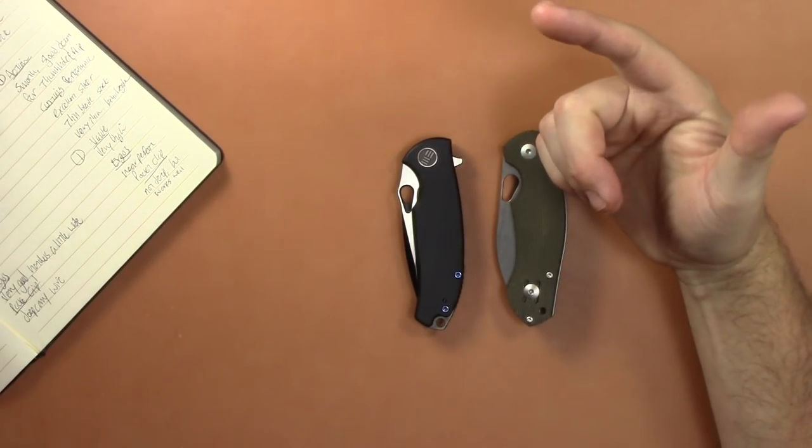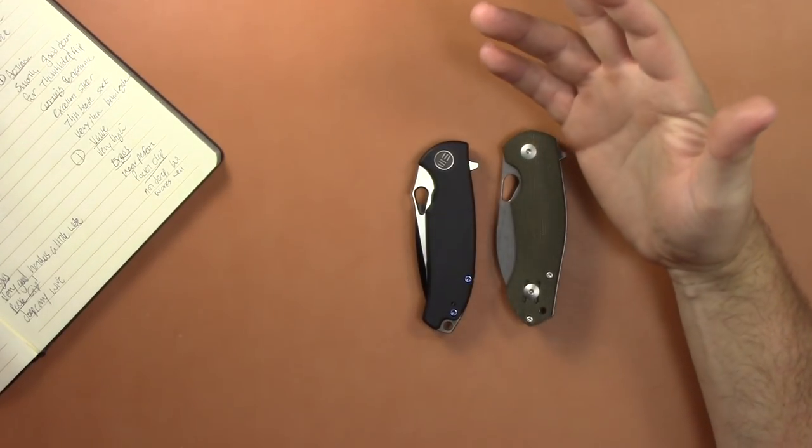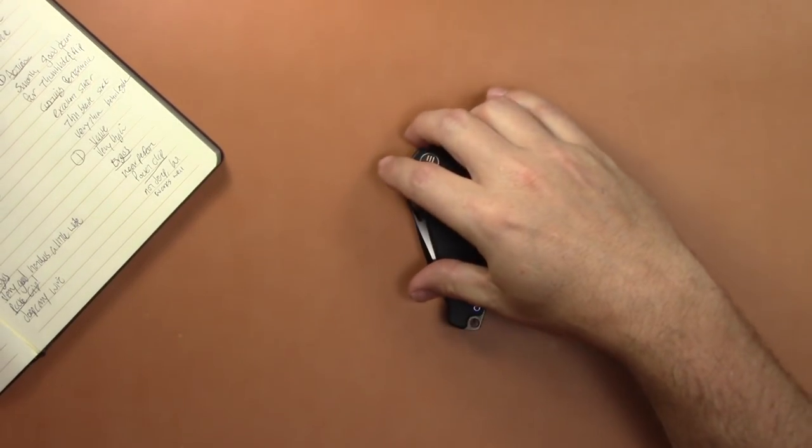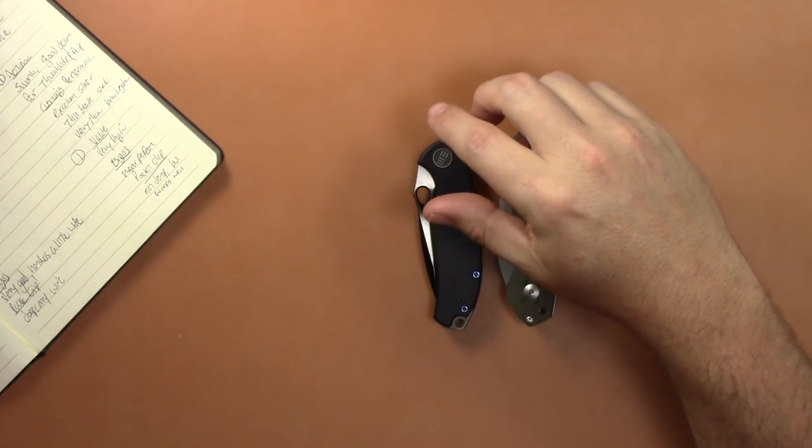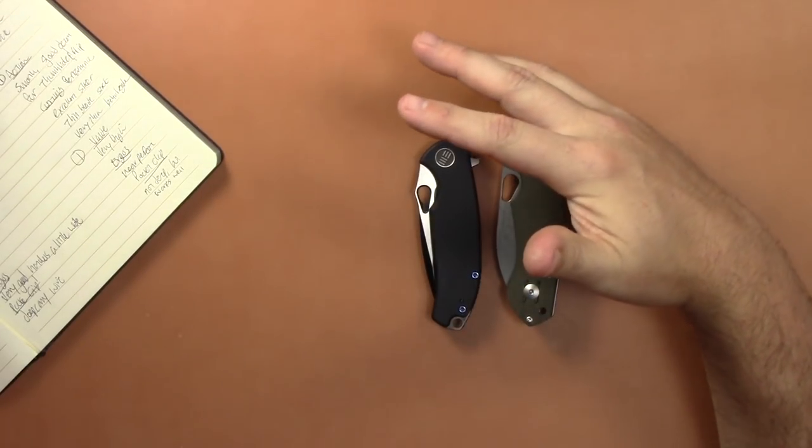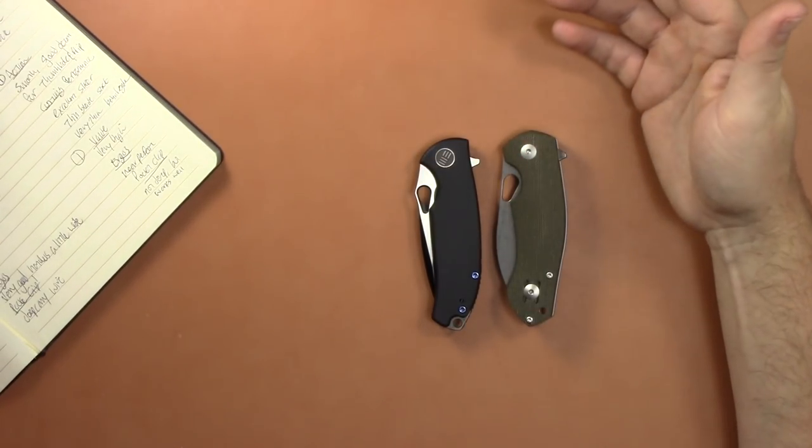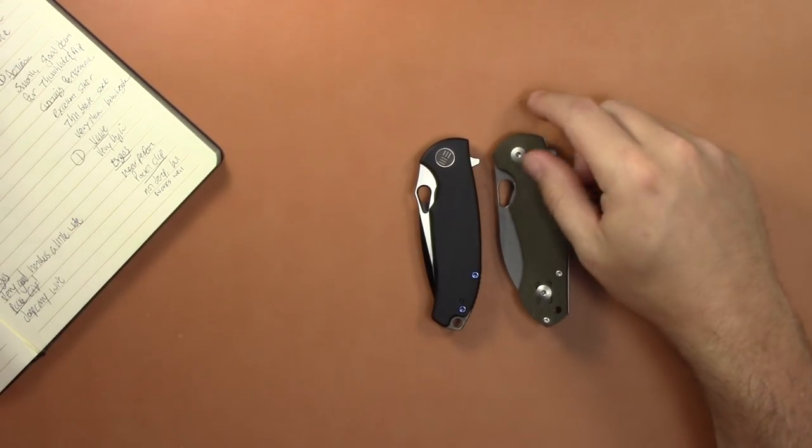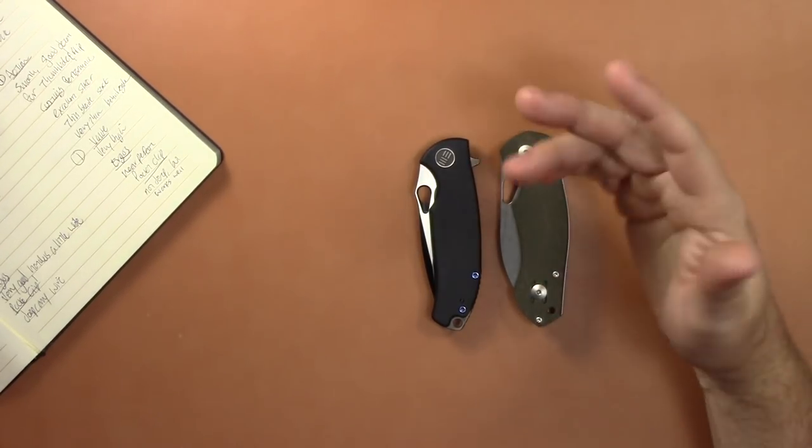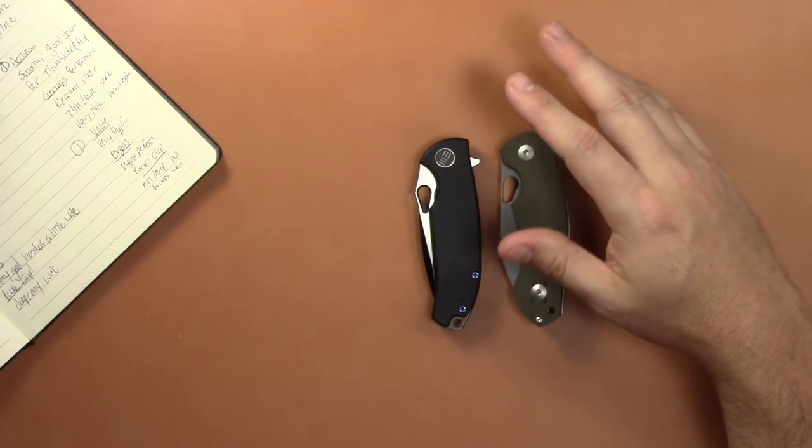We're going to go over price, materials, the action of the knife, the cutting performance, the value, the ergonomics, the pocket clip, the weight, how available a knife is, the aesthetics of the knife, the overall fit and finish, and the lock disengagement which can go along with action. So let's go ahead and get started.